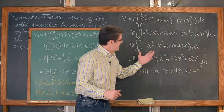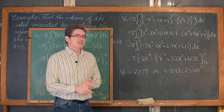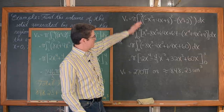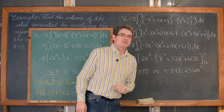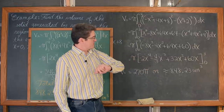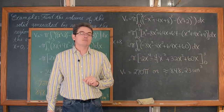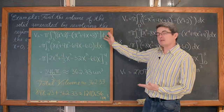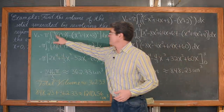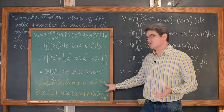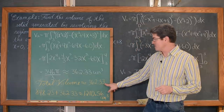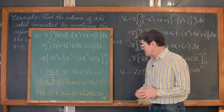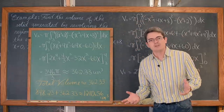As our algebra confirmed, those graphs intersect at x equals 3. The definite integral from 0 to 3 gives a volume of approximately 848.23 cubic units after rotation. Setting up another definite integral from 3 to 4 — where x squared plus 2 becomes the outer radius — gives a volume of approximately 362.33 cubic units. The total volume is approximately 1,210.56 cubic units.